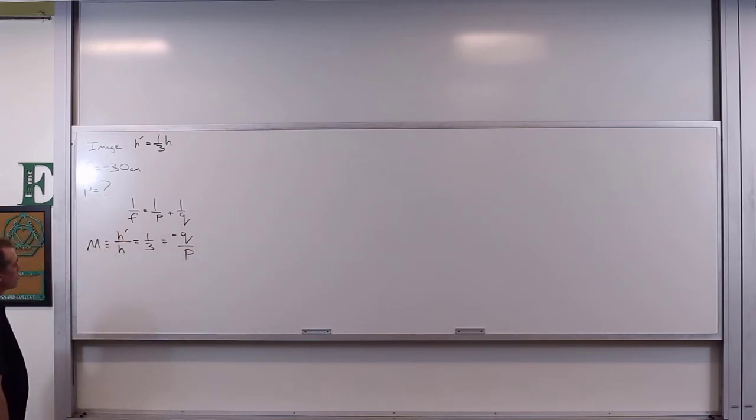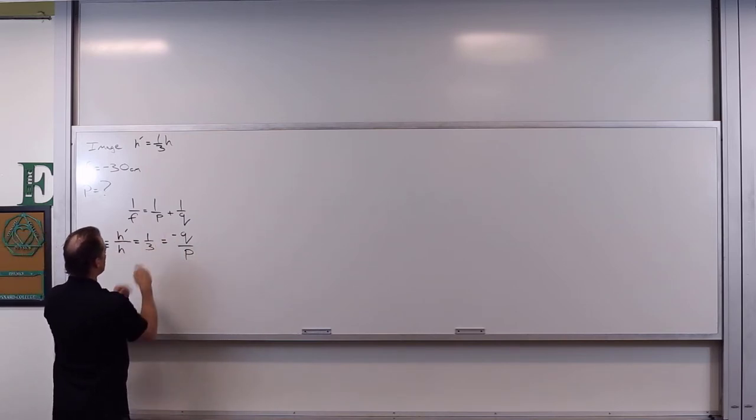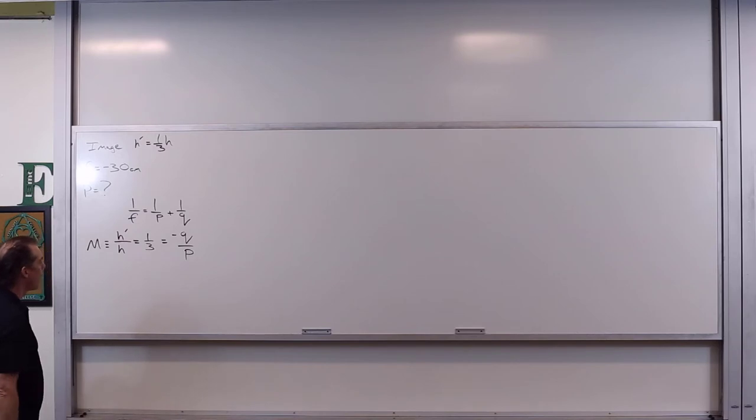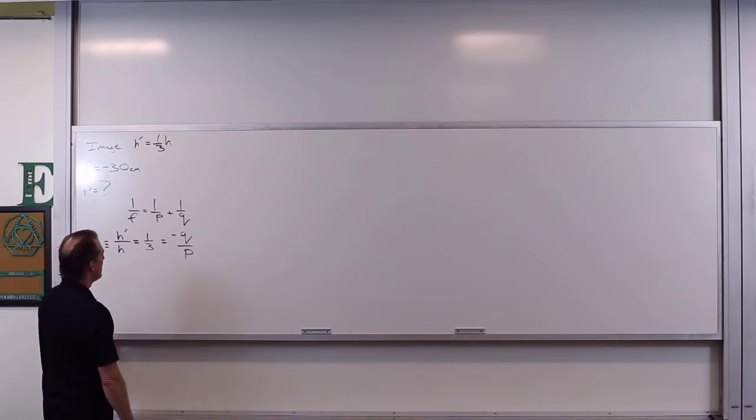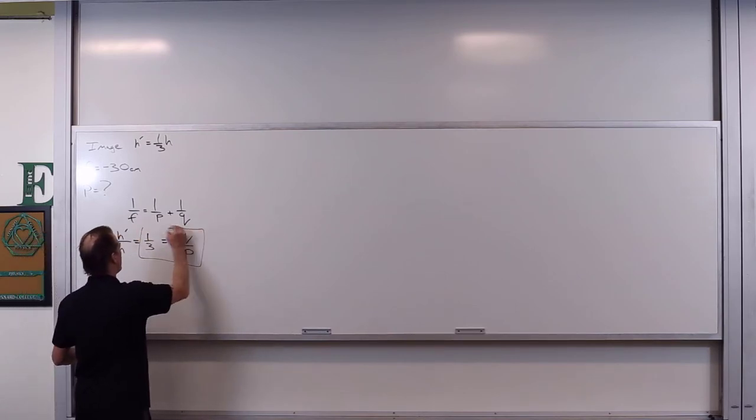So what we can do with this is we can rewrite q in terms of p. Because really we've got negative q over p is equal to one third. Or I could say that q is equal to negative p over three. So we're going to take this right here.